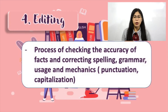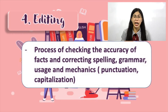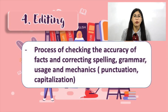Next is editing. How is it different from revising? In editing, as defined in thinkwritten.com, only the structure of writing is corrected — the text still remains the same. You are simply fixing the mistakes you have made while writing it. It is a process of checking the accuracy of facts and correcting spelling, grammar, usage, and mechanics, including punctuation and capitalization. You have to check subject-verb agreement, pronoun-antecedent agreement, run-on sentences and sentence fragments, usage of confusing pairs, etc. Those are some of the minor changes that you will do in editing.